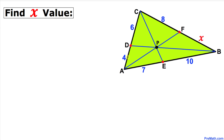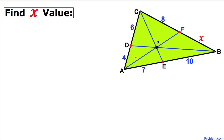Welcome to PreMath. In this video tutorial we have got triangle ABC, and within this triangle we have three blue concurrent line segments passing through the same point P, with values of 7, 4, 6, 8. This value is unknown and this value is 10 as you can see in this figure. We are going to calculate the value of this unknown X.